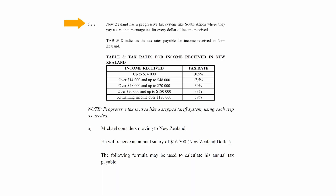In Question 5.2.2, it is stated that New Zealand has a progressive tax system like South Africa, where a certain percentage of tax is paid for every dollar of income received. Table 8 indicates the tax rates payable for income received in New Zealand. A note states that progressive tax is used like a step tariff system, using each step as needed.